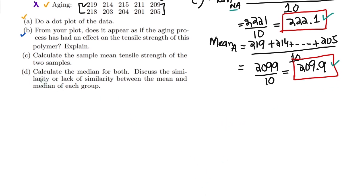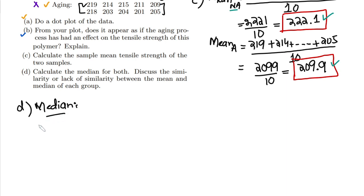Now let's move to the last part of this question. We have to calculate the median for both datasets and discuss the similarity or lack of similarity between the mean and median of each group. In order to find the median, step 1 is to sort our data.